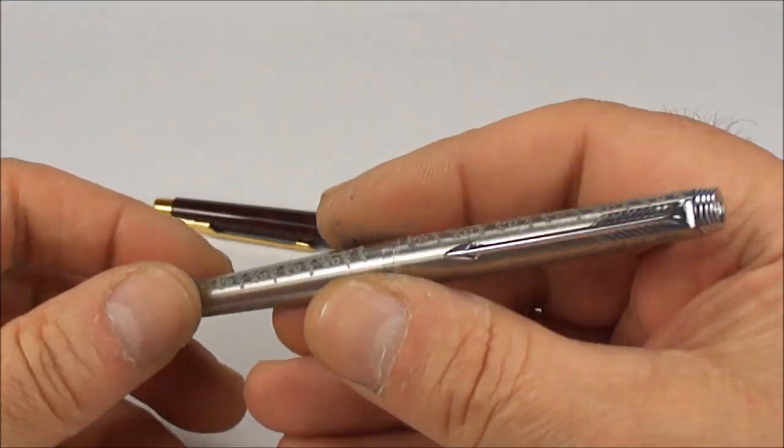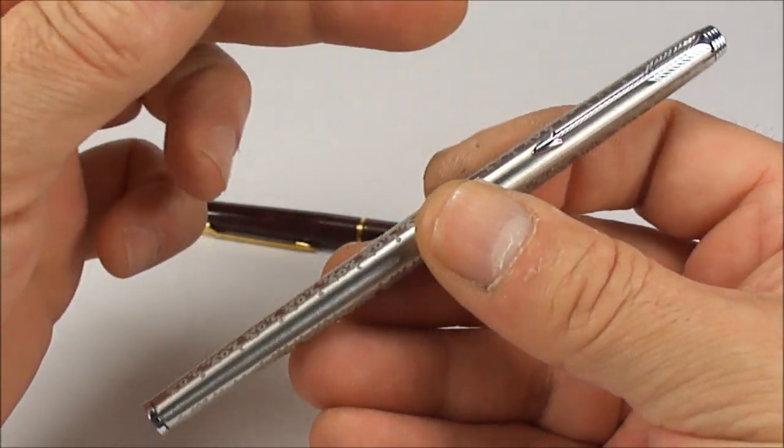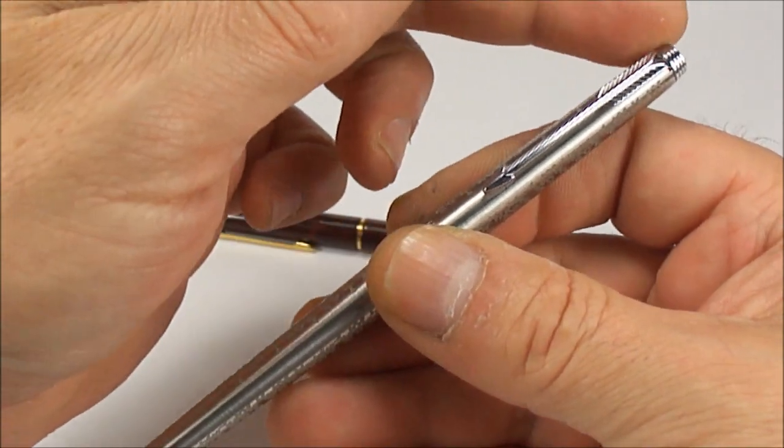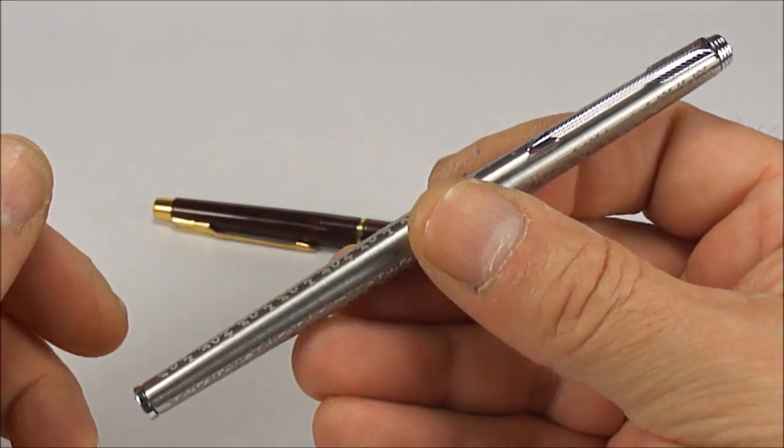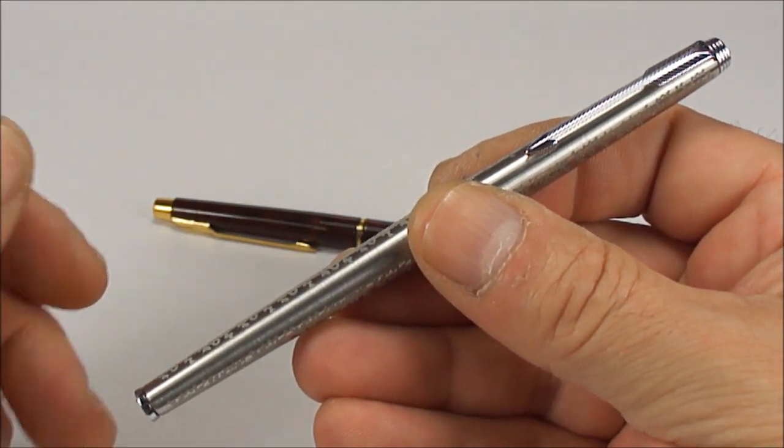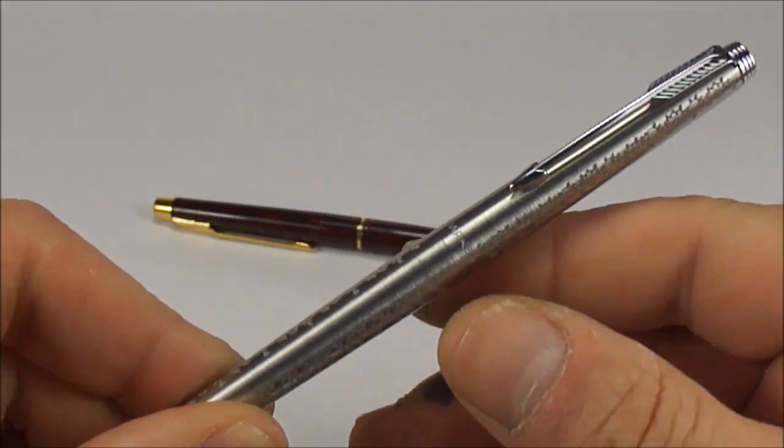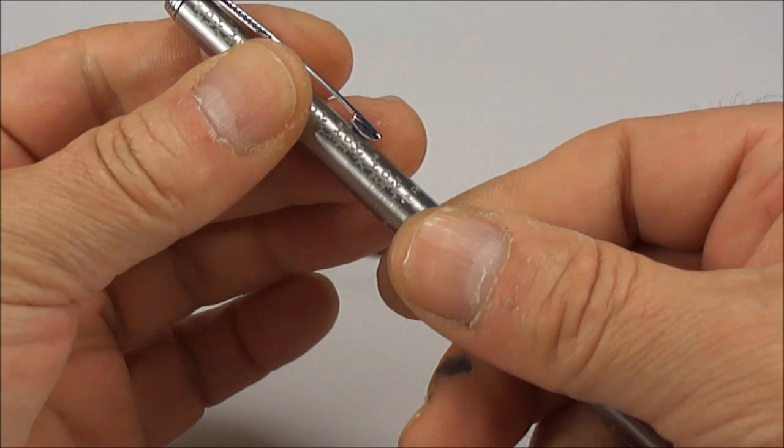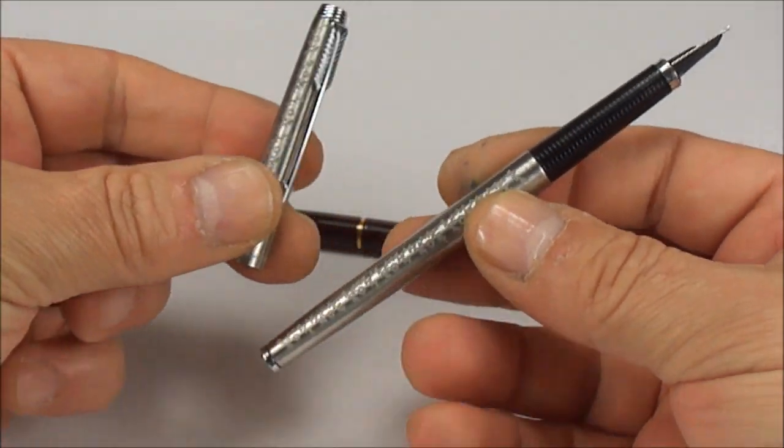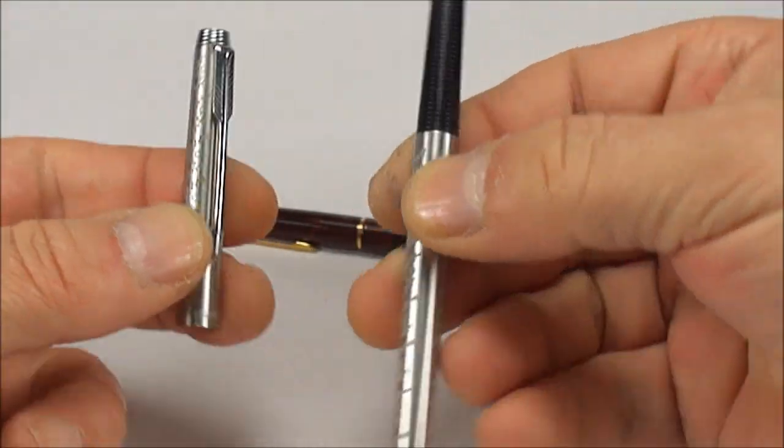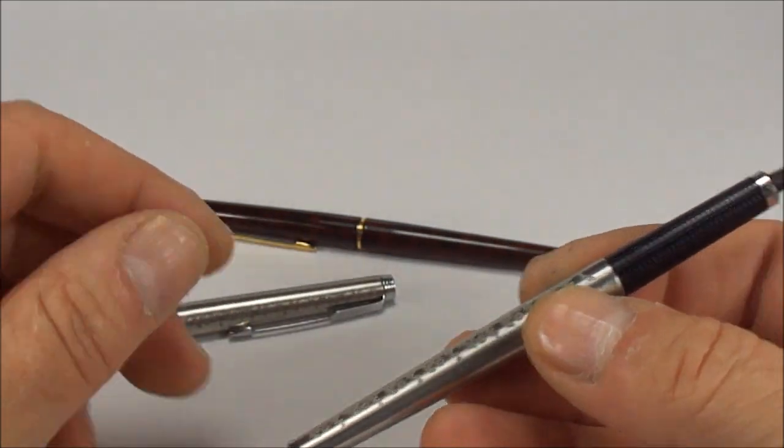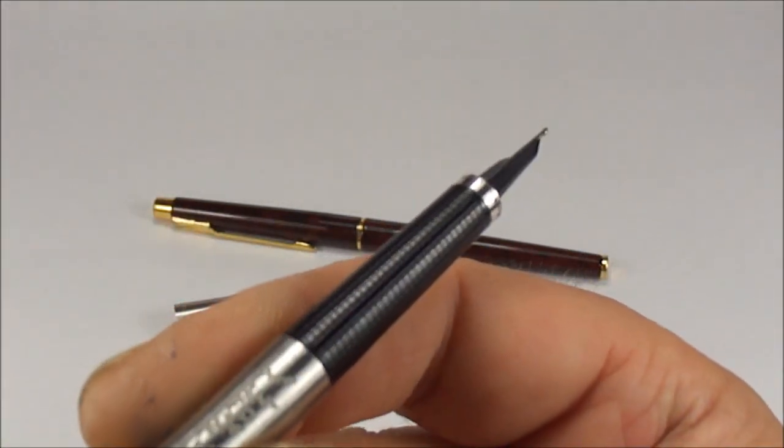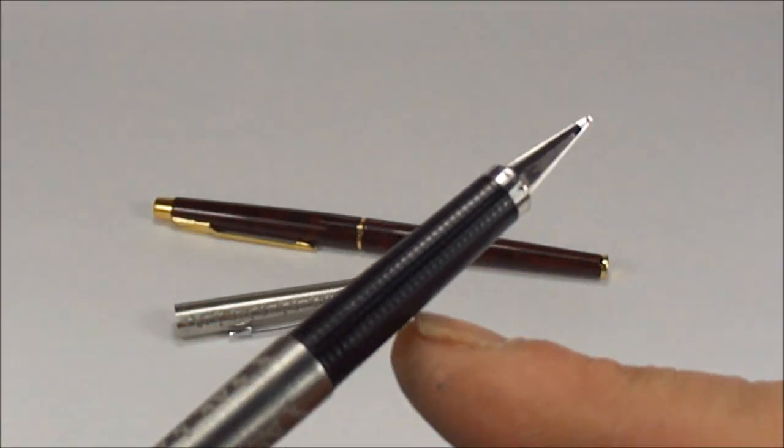The size of this pen from the top of the cap to the bottom is 133 millimeters. The diameter is just over 9 millimeters. If we take the cap off, you can see this long section with a crosshatch pattern and a chrome or silver ring at the top.